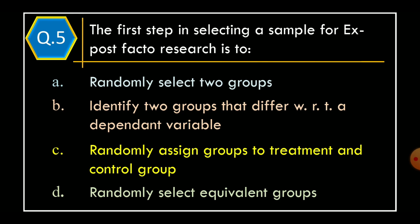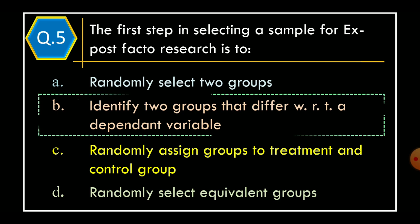Question 5. The first step in selecting a sample for ex post facto research is to: Option A: Randomly select two groups. Option B: Identify two groups that differ with respect to a dependent variable. Option C: Randomly assign groups to treatment and control group. Option D: Randomly select equivalent groups. The correct option is Option B, identify two groups that differ with respect to a dependent variable.